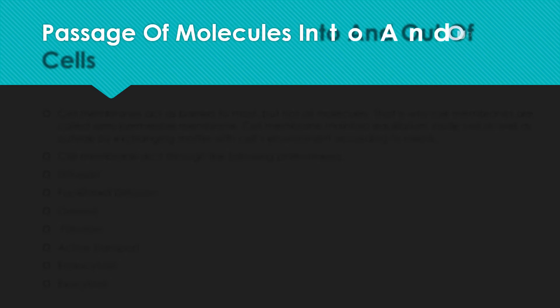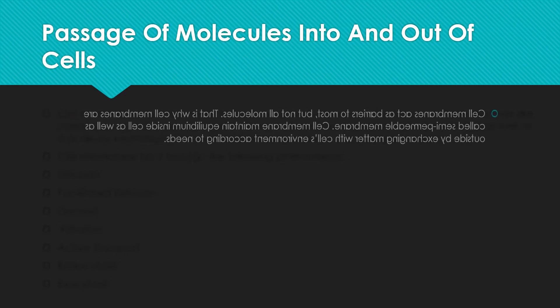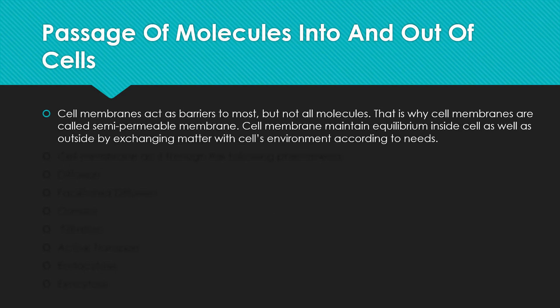First we study the introduction: the cell membrane acts as a barrier to most, but not all, molecules. The cell membrane allows molecules to pass through it according to the cell's needs, that's why the cell membrane is also called a semi-permeable membrane. The cell membrane maintains equilibrium inside as well as outside the cell by exchanging matter with the cell environment according to the need of the cell.